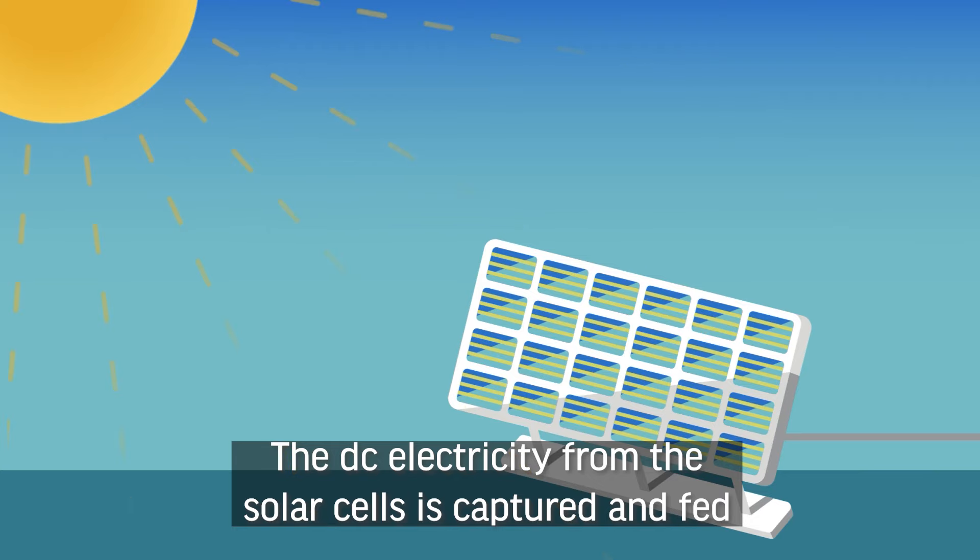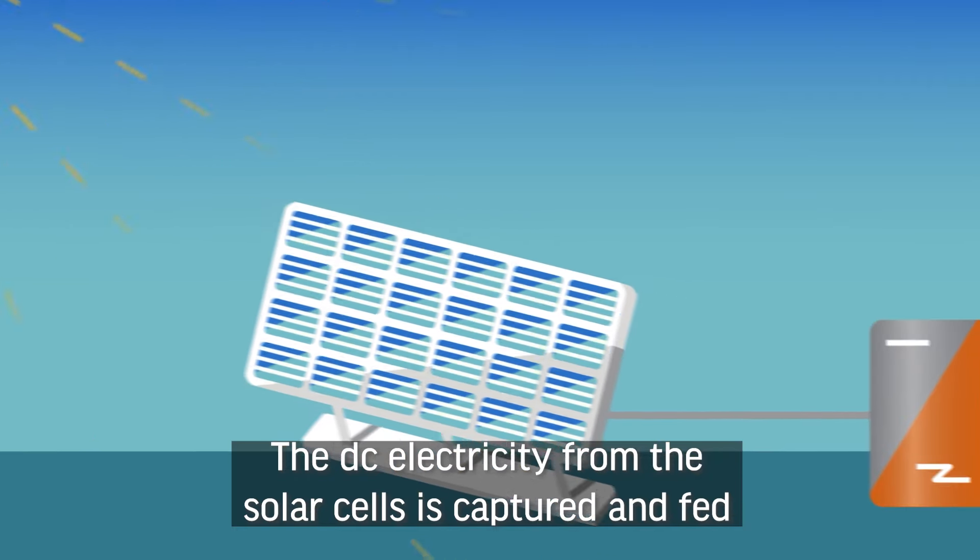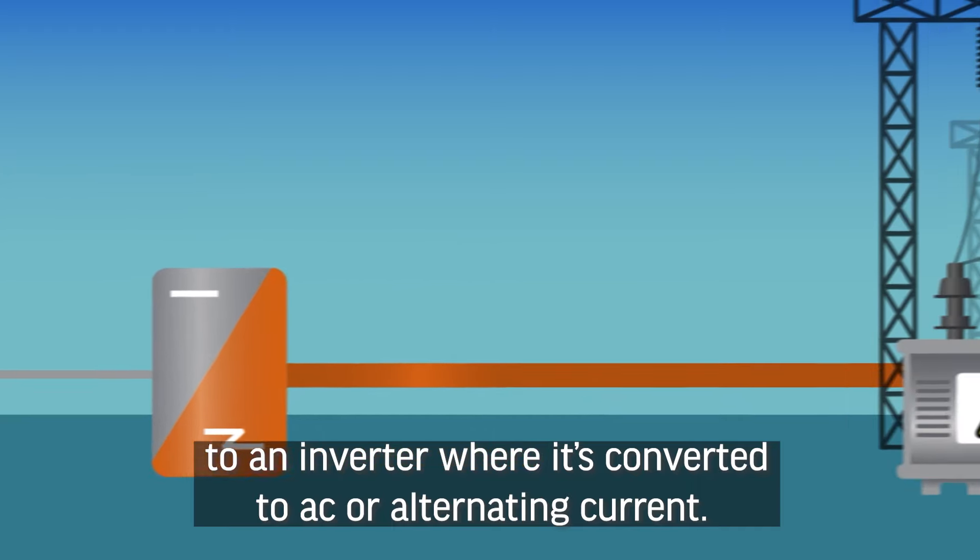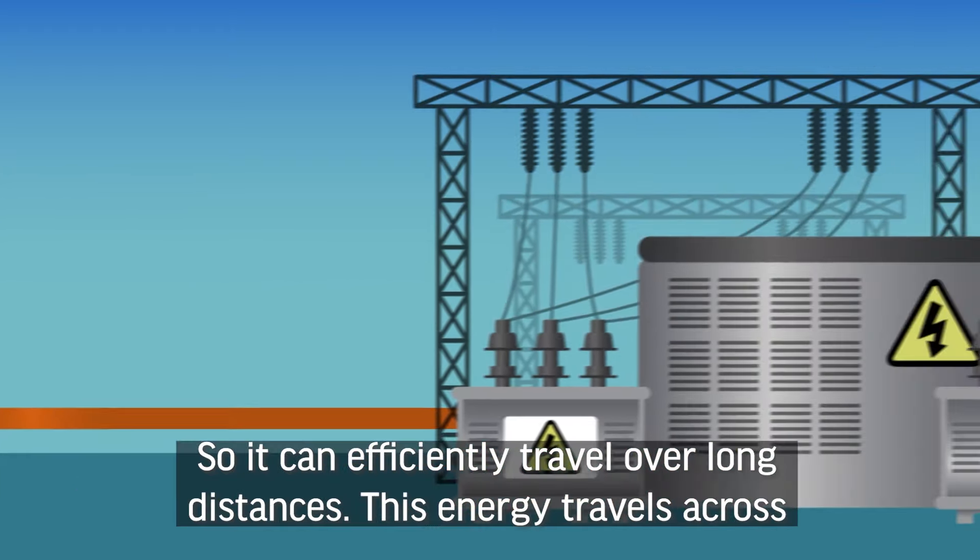The DC electricity from the solar cells is captured and fed to an inverter, where it's converted to AC, or alternating current, so it can efficiently travel over long distances.